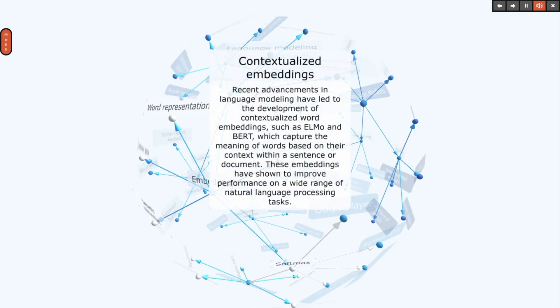Recent advancements in language modeling have led to the development of contextualized word embeddings, such as ELMo and BERT, which capture the meaning of words based on their context within a sentence or document. These embeddings have shown to improve performance on a wide range of natural language processing tasks.